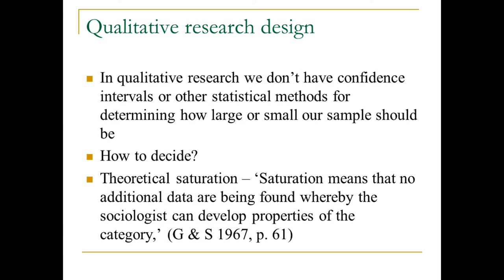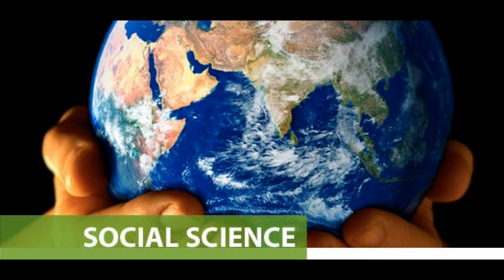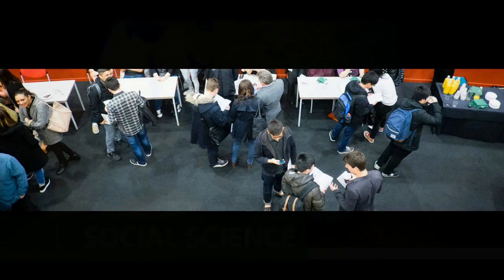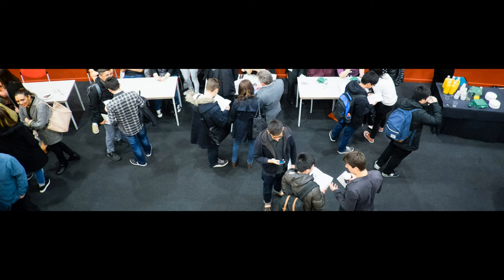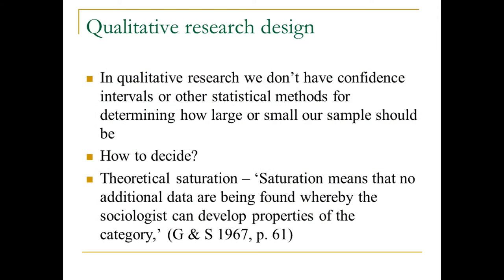In qualitative research, we don't have confidence intervals or statistical methods for determining how large or small a sample size should be. How do you decide? You decide when you reach theoretical saturation — when you go to collect more data and no new information is being found. By the end of the qualitative election study of Britain, after I'd run about 14 focus groups, it didn't seem to matter if I was in England, Scotland, or Wales. I'd spent the last six weeks in hours and hours of focus groups listening to almost 100 people, and I'd reached the point where I'd identified the patterns repeatedly coming up with no new information emerging. That's the point of theoretical saturation.